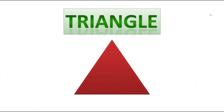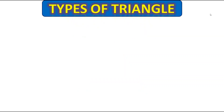As you all know about triangles. If you don't know, just go to my previous video where I had explained about triangles, quadrilaterals, and everything. Today we are going to learn about the types of triangles, which are based on two factors: sides and angles. First we will see based on sides.